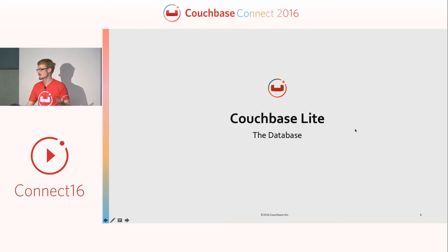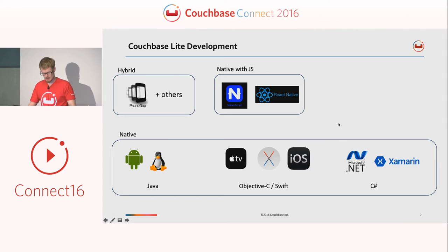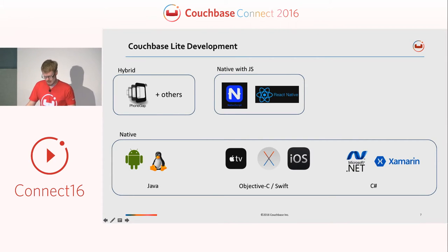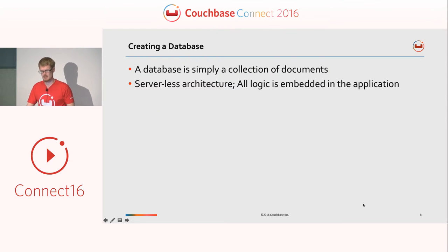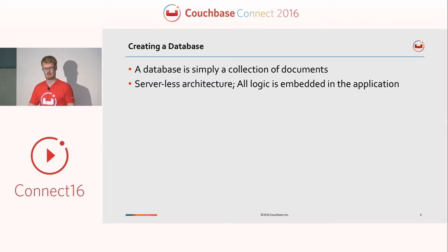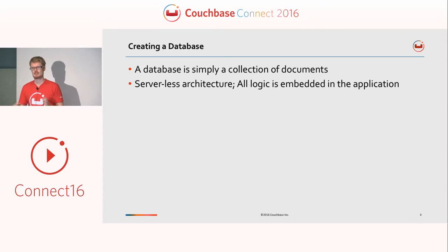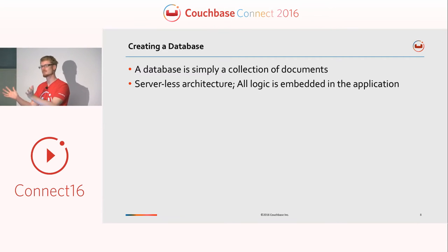Let's start at the beginning, at the database. We support a number of platforms with native solutions for Java, Objective-C, Swift, and C Sharp, as well as Hybrid, PhoneGap, NativeScript, and React Native. A database in Couchbase Lite and NoSQL is simply a collection of documents — a collection of JSON files. Couchbase Lite is an embedded serverless architecture, much like SQLite, with all logic embedded within the application.